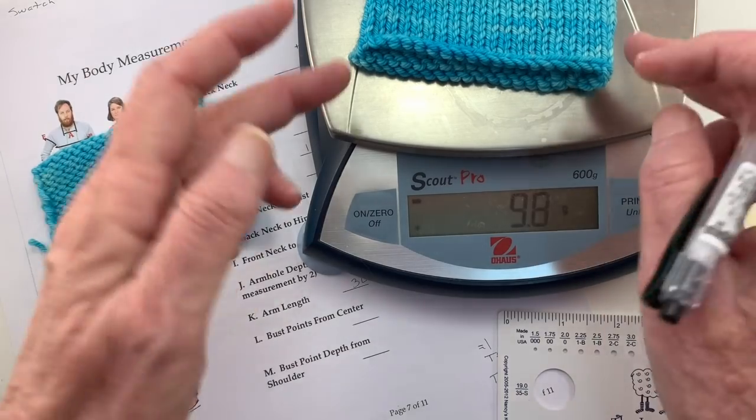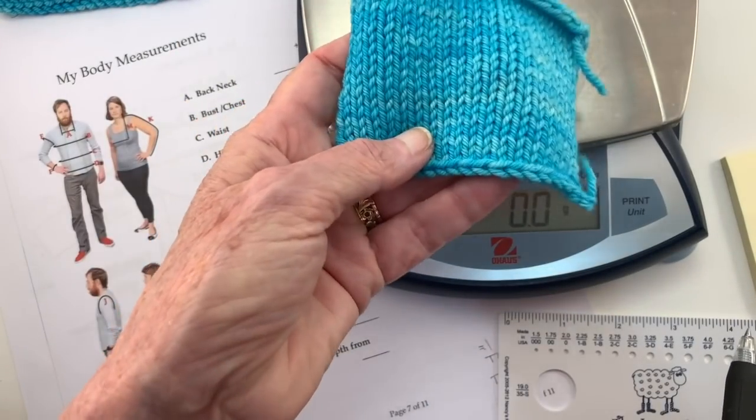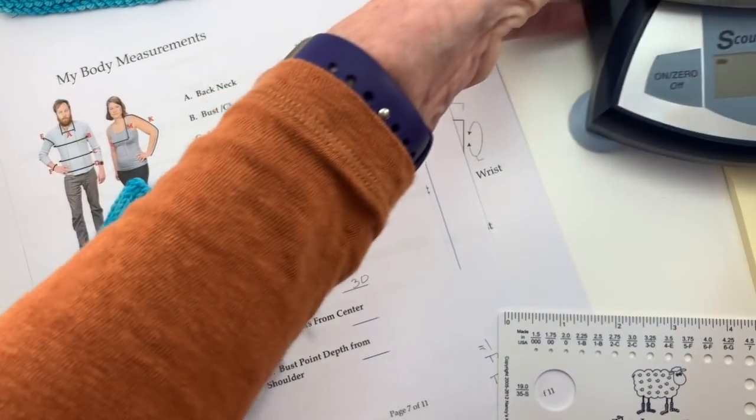So if you're doing in the round, you would document that. From this point forward, I'm going to use the information from this swatch to move forward. So we'll remove the scale.